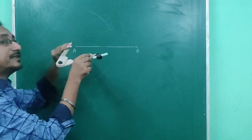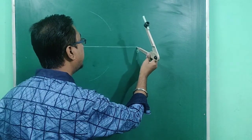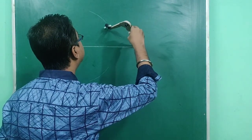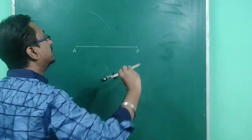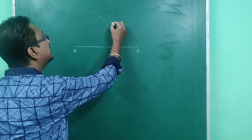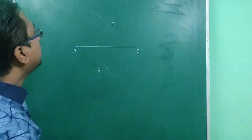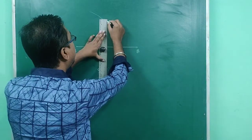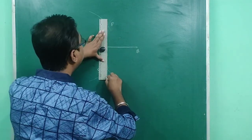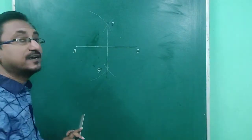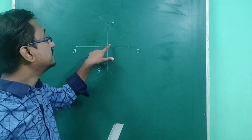Without moving my compass, with the same radius, I now take center B and cut these arcs. I have cut the arcs in this manner. Now let these arcs intersect each other at P and Q. I am joining P and Q, and here comes the perpendicular bisector.